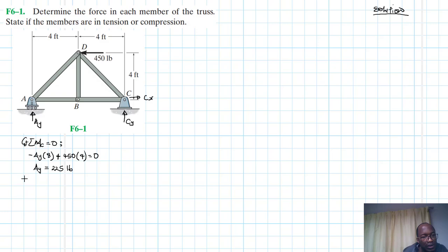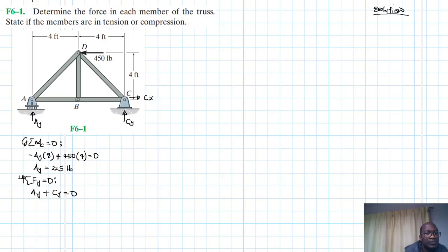Then, summation of forces in the y direction equal to zero, taking upward as positive. We have Ay plus Cy minus 450 equal to zero. We already found Ay, so replacing it, we find that Cy is equal to minus 225 pounds.